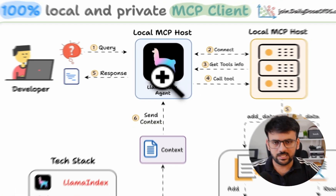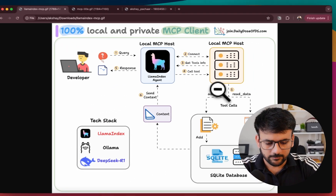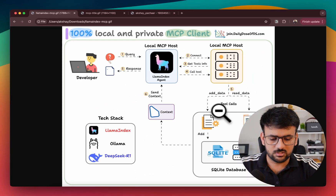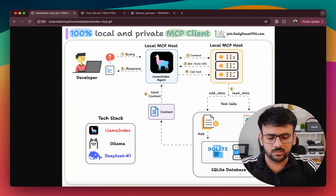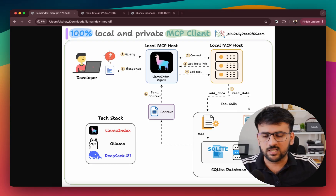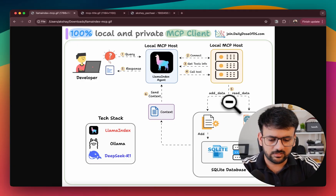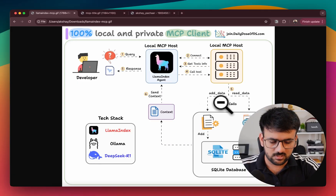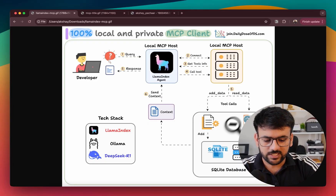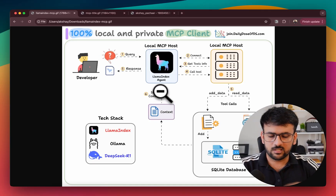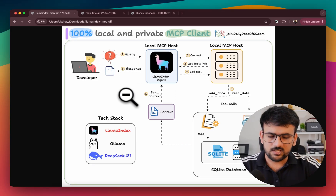Based on the user query, the agent decides what is the right tool to call, and then we have actual tool calling or function calling. The MCP server we have has two tools — it's a server built on top of an SQLite database. But our client is generic and universal, and will easily connect to any server without any code changes on the client side. To keep things simple, we have one tool to add data to the server and one to read data from the server. Based on whatever tool is called, it generates a response, which is received back by the agent to provide a final answer to the user.